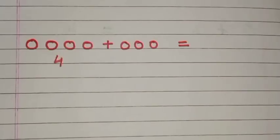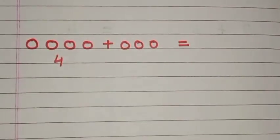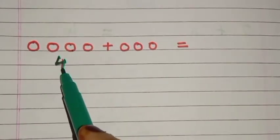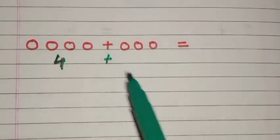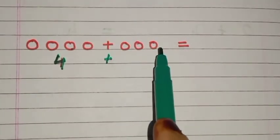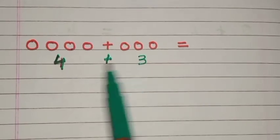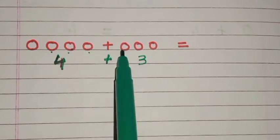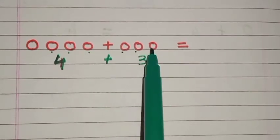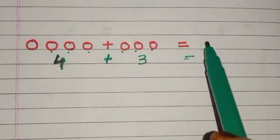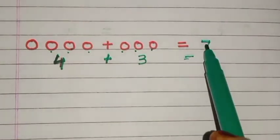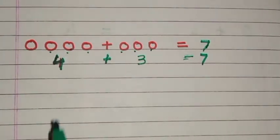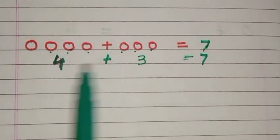How many circles are there? One, two, three, four — so four circles. Plus here, how many? One, two, three. So we add these numbers: one, two, three, four, five, six, seven. Four plus three equals seven. Write again: seven.